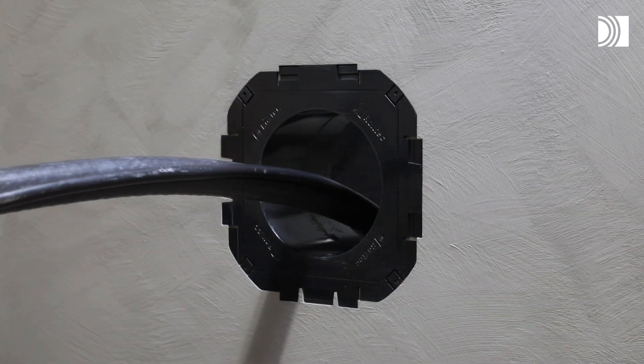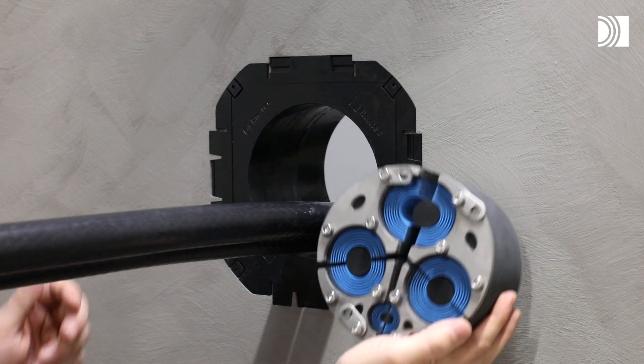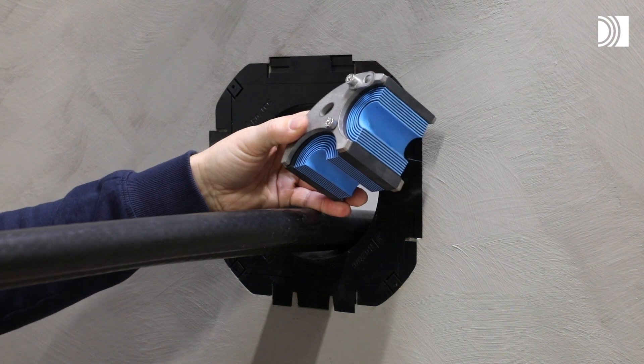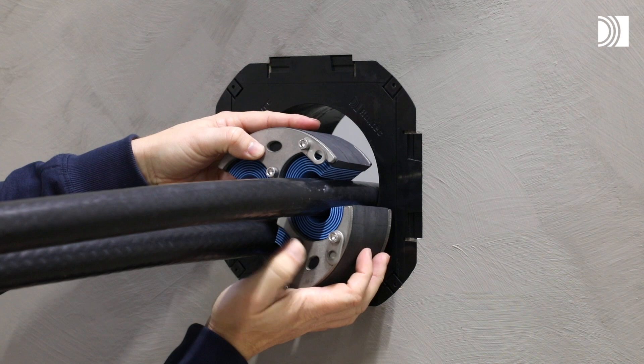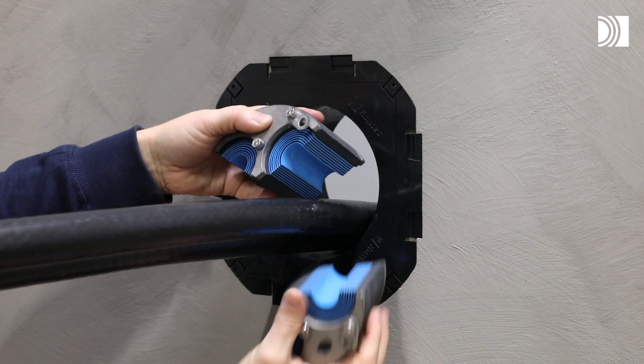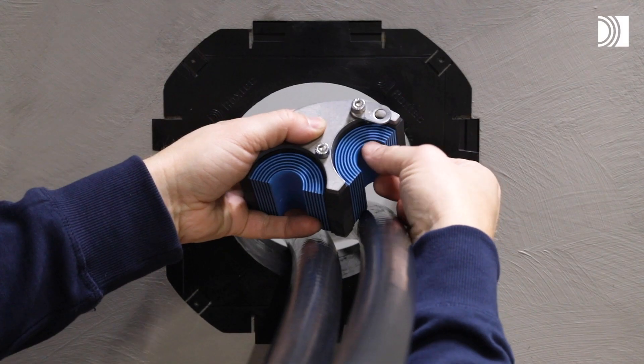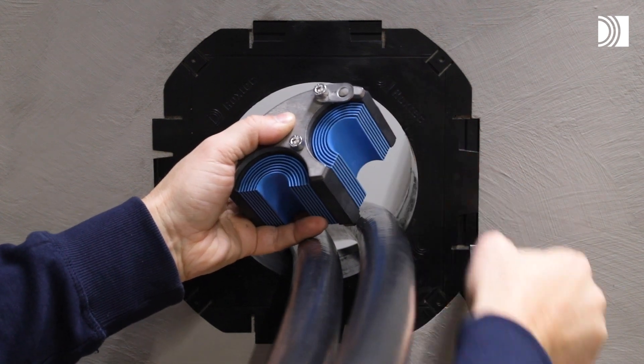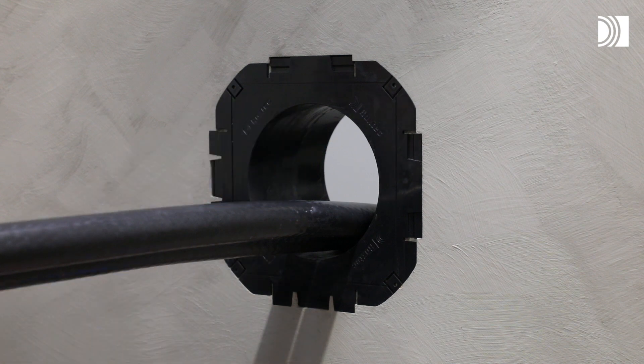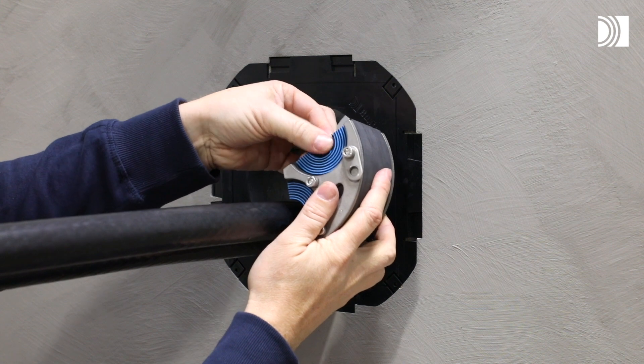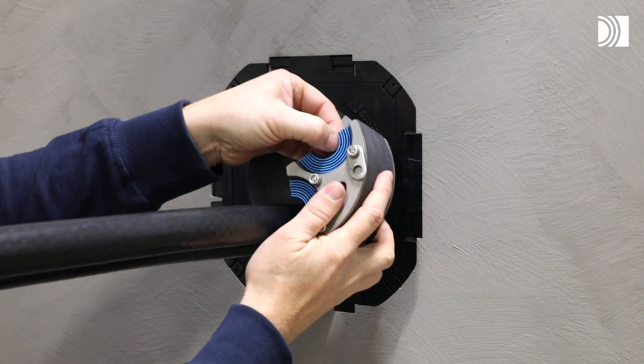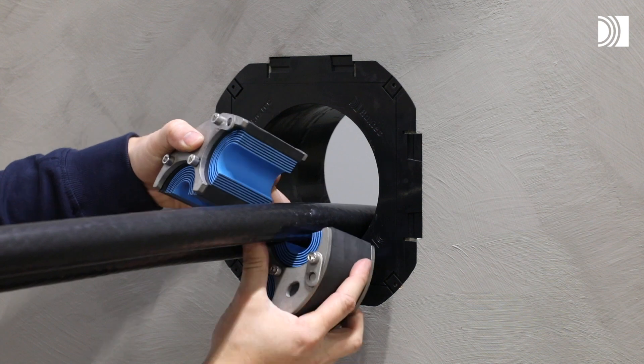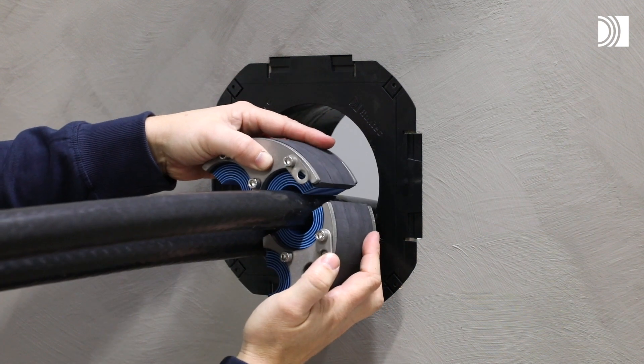Adapt the seal. Achieve a gap of 0 to 1 millimeter between all seal parts for all cables or pipes. Adapt the seal by peeling off layers. The number of layers may not differ by more than one between the corresponding seal parts.